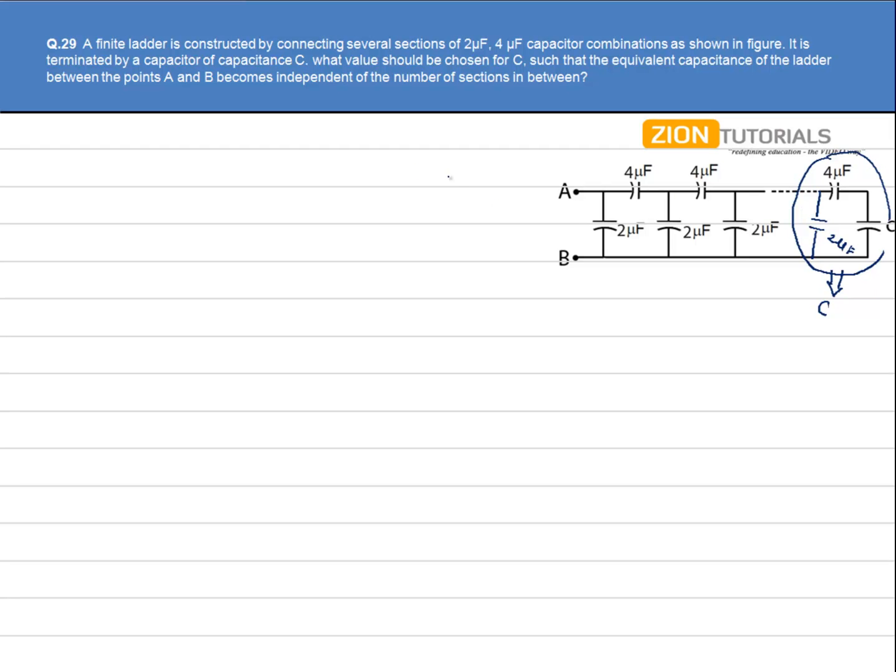So let's calculate the equivalent of this much of circuit. We have 4uF and C in series. So let's say that is C dash, and that comes out to be 4C upon 4 plus C. That is by using the formula 1 by C dash is equal to 1 by 4 plus 1 by C, as they are in series.